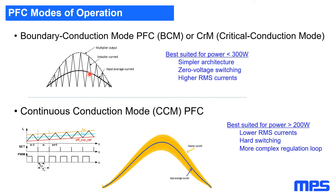The drawback of BCM is the very large ripple current — twice the average input current — causing high RMS currents that make it suitable only up to a certain power level. BCM is generally best suited for power less than 300 watts, though in certain conditions it can be used at higher power.